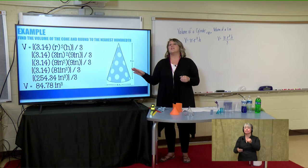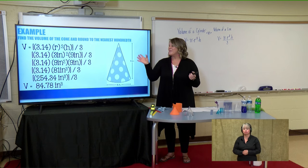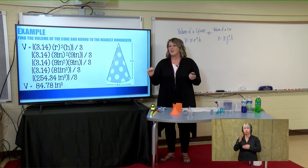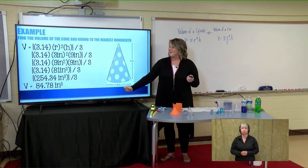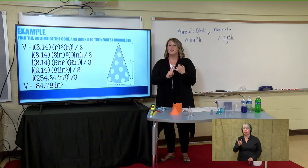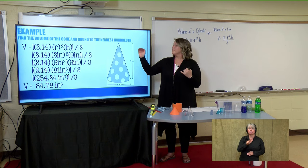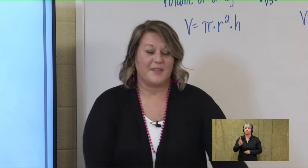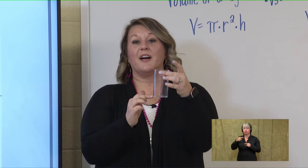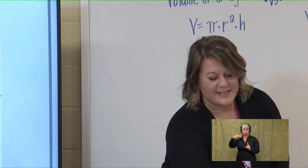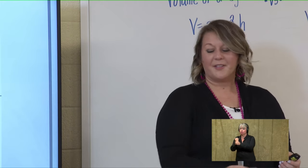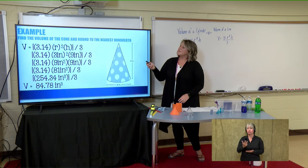The last step is to divide by three. You don't need to enter the inches cubed into the calculator — just enter 254.34 divided by three, and you'll get 84.78 inches cubed. Volume is always in cubic units because there are three dimensions: the radius squared and the height. Same thing for the cylinder — radius squared and height make it three-dimensional. So we proved that a cone is one-third of a cylinder, and three cones give us the full cylinder volume, as long as they have the same diameter and height.